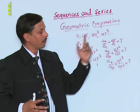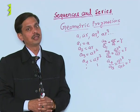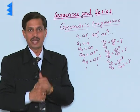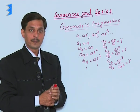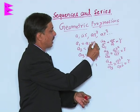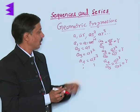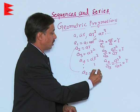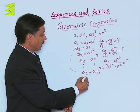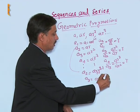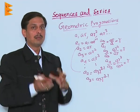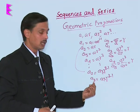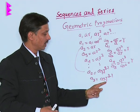Now, if any geometric progression is given, what is the method of finding its nth term? This is a matter of observation of the pattern. We observe that A1 is A, which can also be written as A multiplied by R to the power 1 minus 1. So A1 is A into R^(1-1), and A2 can be expanded as A into R^(2-1). A3 is A into R^(3-1). So whatever term we need, it is the first term into the common ratio to the power 1 less than the number of the term. As for the third term, it is A·R^(3-1).